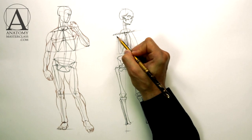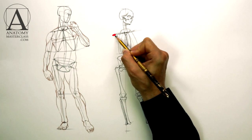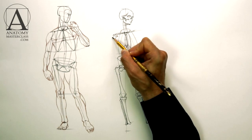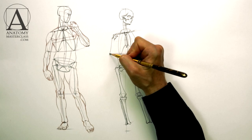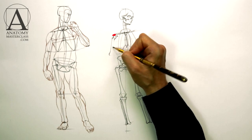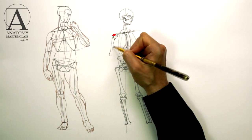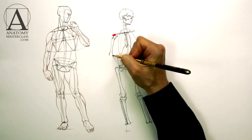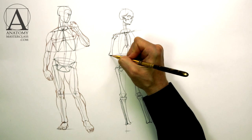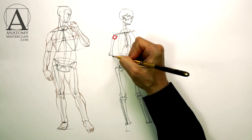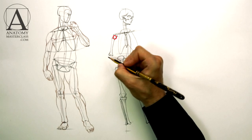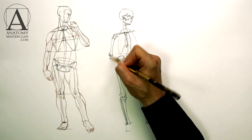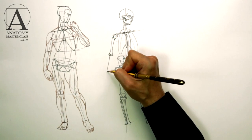The shoulder blade has two bony projections: the acromion and the coracoid processes, with several muscles attached to them. The acromion sits above the round head of the upper arm bone, protecting it like a shield. This round head of the upper arm is part of the ball and socket shoulder joint. The socket of this joint is located on the shoulder blade.